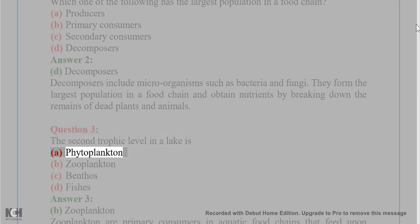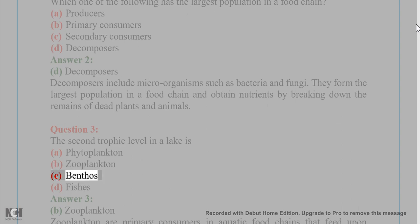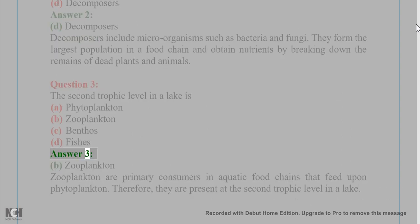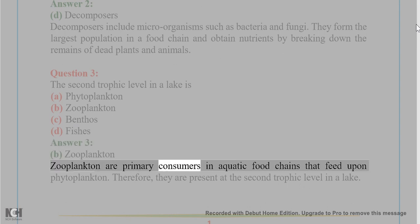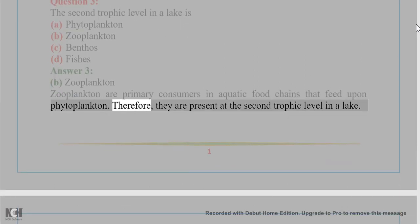Question 3: The second trophic level in a lake is (A) Phytoplankton, (B) Zooplankton, (C) Benthos, (D) Fishes. Answer 3: (B) Zooplankton. Zooplankton are primary consumers in aquatic food chains that feed upon phytoplankton; therefore they are present at the second trophic level in a lake.